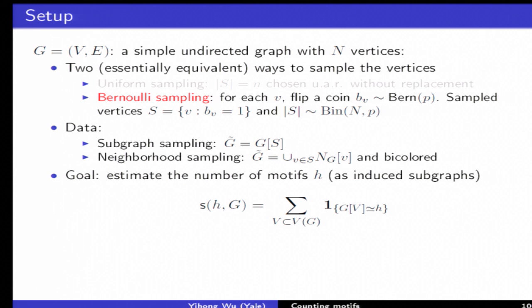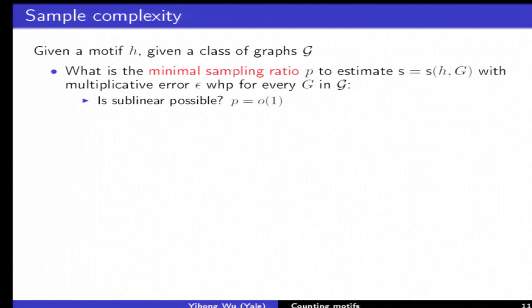The goal is to estimate number of given motifs denoted by little h, induced subgraphs for example a clique of size 3 or 4. Sample complexity means given a class of graphs defined by maximum degree, what is the minimum sampling ratio to estimate the number of given motifs up to plus minus epsilon multiplicatively. The key question is, is sublinearity possible, meaning is it possible to only observe a vanishing fraction of the vertices.